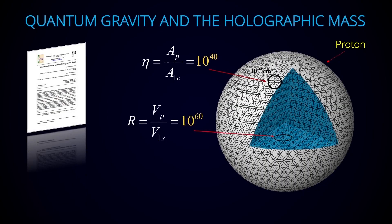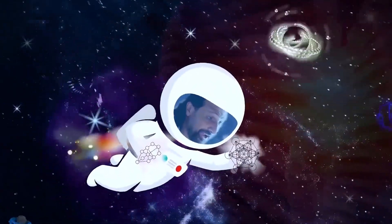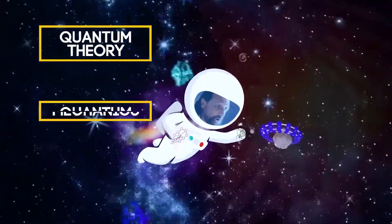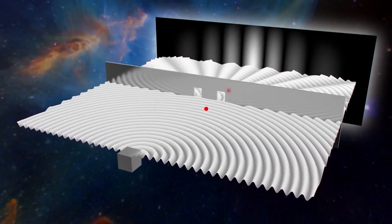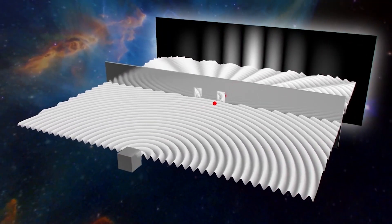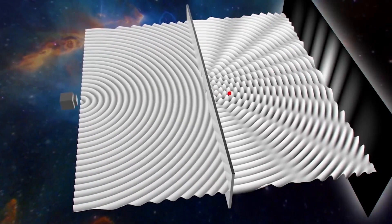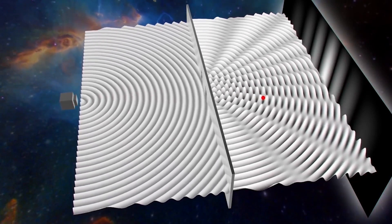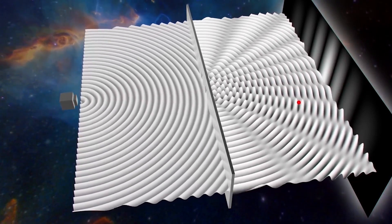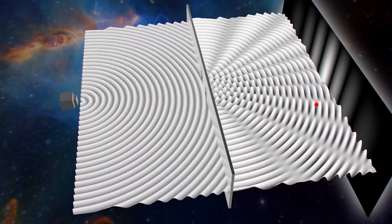Nassim Haramein discusses the most exciting ideas in physics today and reveals emerging concepts in quantum theory, quantum mechanics, and quantum field theory. When the particle moves through the field, it makes waves. And if the field has waves in it as well, it will guide the particle in a certain way.